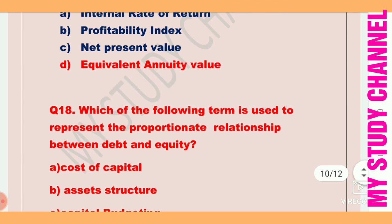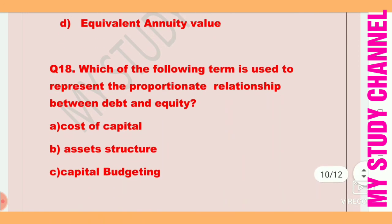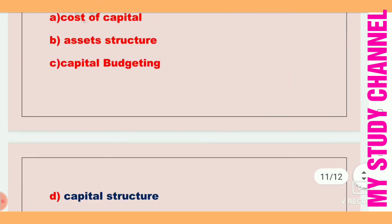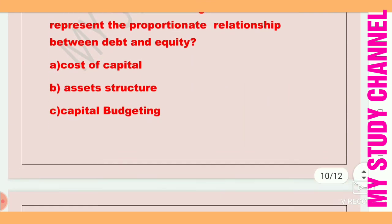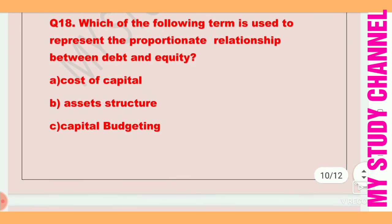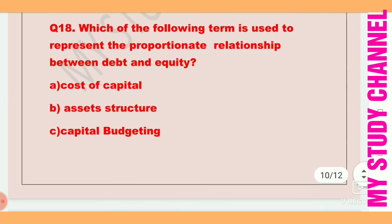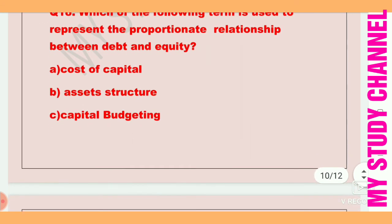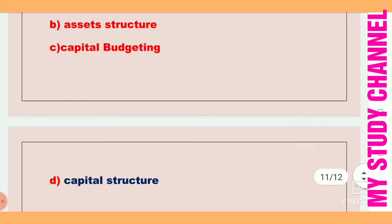Next question: Which of the following terms is used to represent the proportionate relationship between debt and equity? Option A is cost of capital, B is asset structure, C is capital budgeting, D is capital structure. Option D is the right answer — capital structure represents the proportionate relationship between debt and equity.